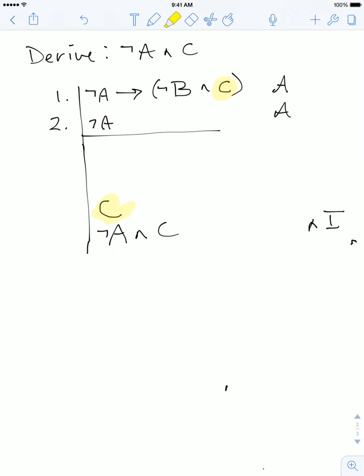In this particular example, if I had the sentence ¬B ∧ C, then I could get C by simply using ∧ elimination.